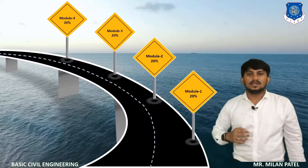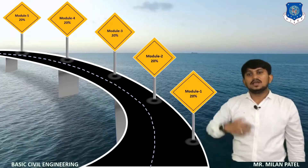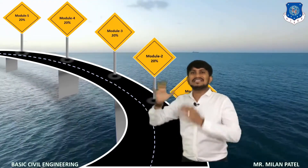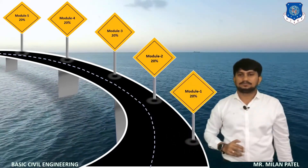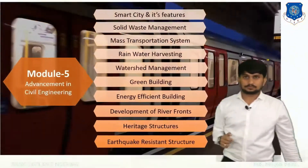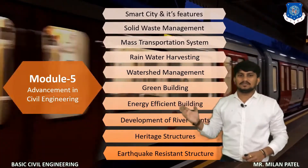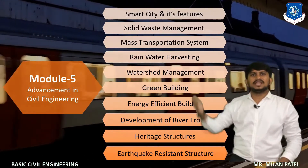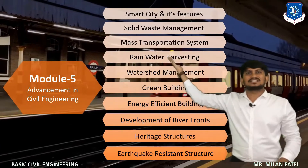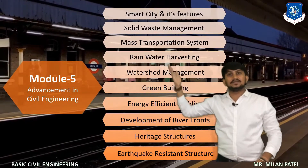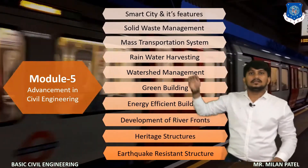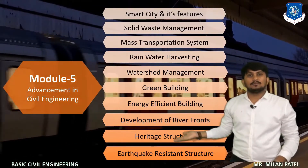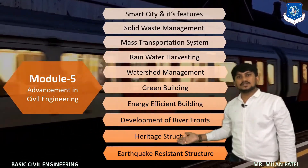Lastly, let's have a look at the topics of Module 5, which has the same weightage of 20%. The beauty of this course is that each module has equal weightage, so each topic has equal importance. This module is all about advancements in civil engineering — the fields where civil engineering research is progressing. Topics include smart cities and their features, solid waste management, mass rapid transit systems like metro rail, rainwater harvesting, water storage management, green buildings, energy-efficient buildings, and measures to control environmental pollution. We will also discuss the development of buildings, heritage structures, and modern project infrastructure.